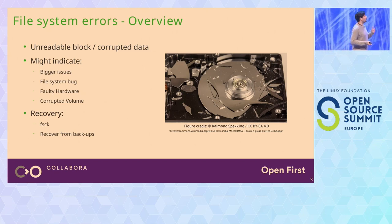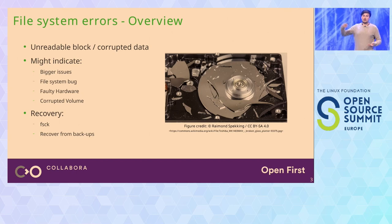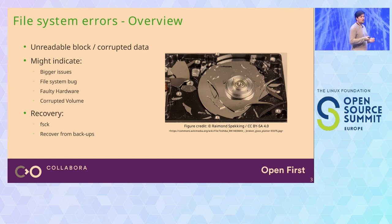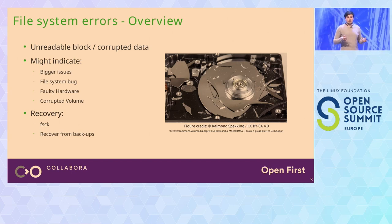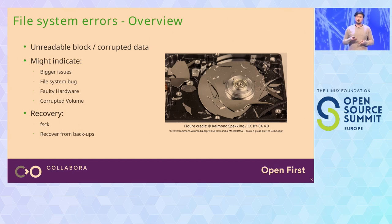A file system error happens basically when you cannot access some data that was originally on the disk. Maybe the block where the data was written got corrupted — a bit flip, some alpha particle from the universe that flipped a bit, and your data is now broken. Maybe the checksum doesn't match anymore, or there was a file system bug that caused data corruption. This sometimes only affects a file, but might indicate bigger issues — if one block is failing, it might mean your underlying disk is failing.